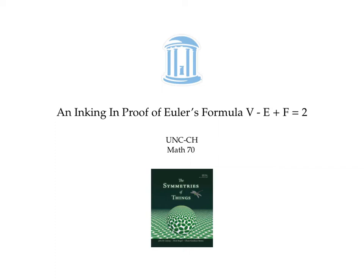In this video, I'll give an informal proof of Euler's formula, V minus E plus F equals 2, based on the proof given in one of my favorite books, The Symmetries of Things.